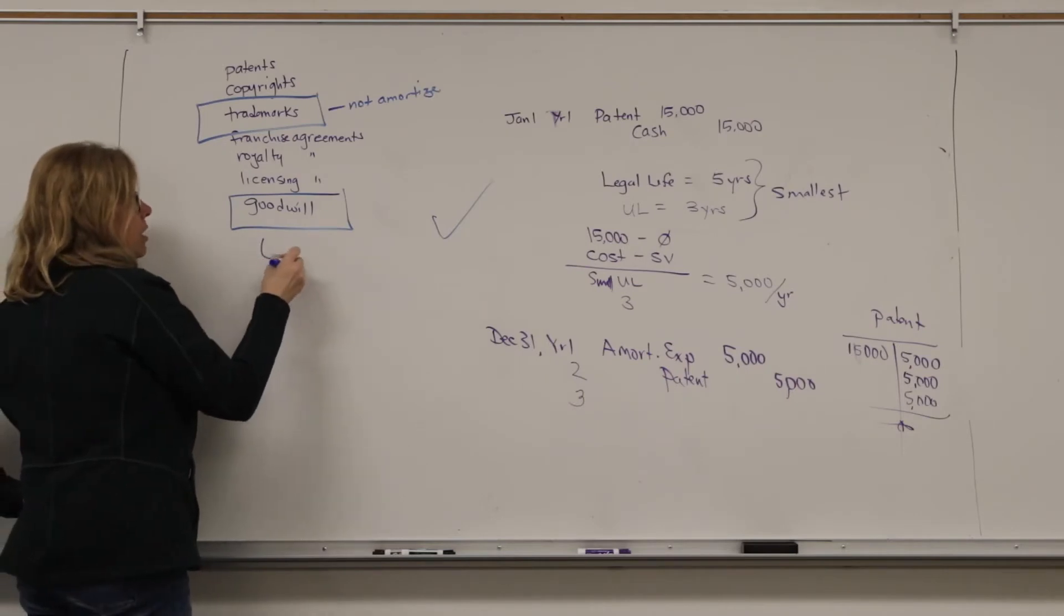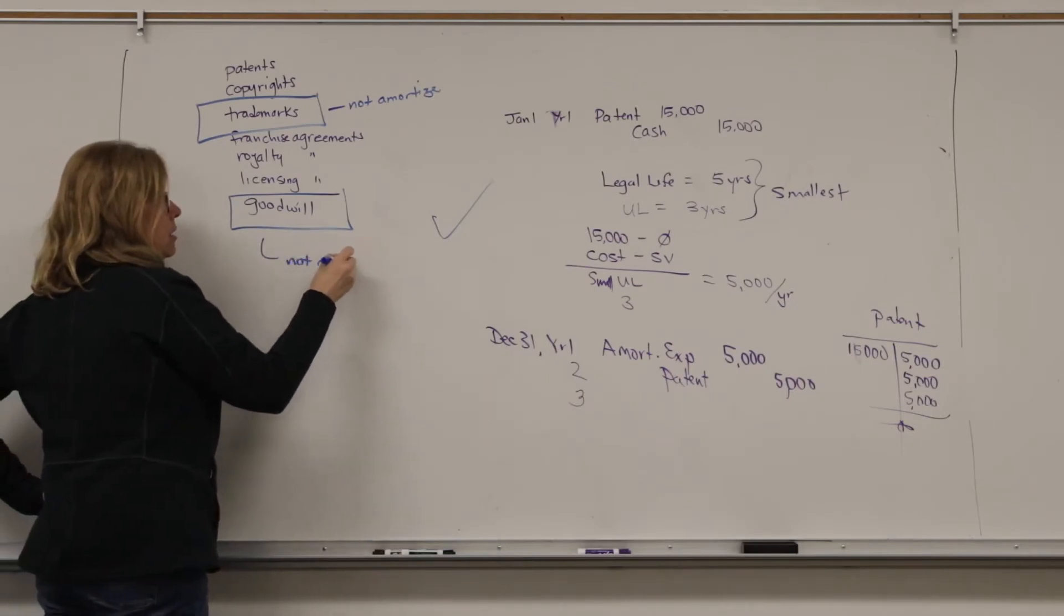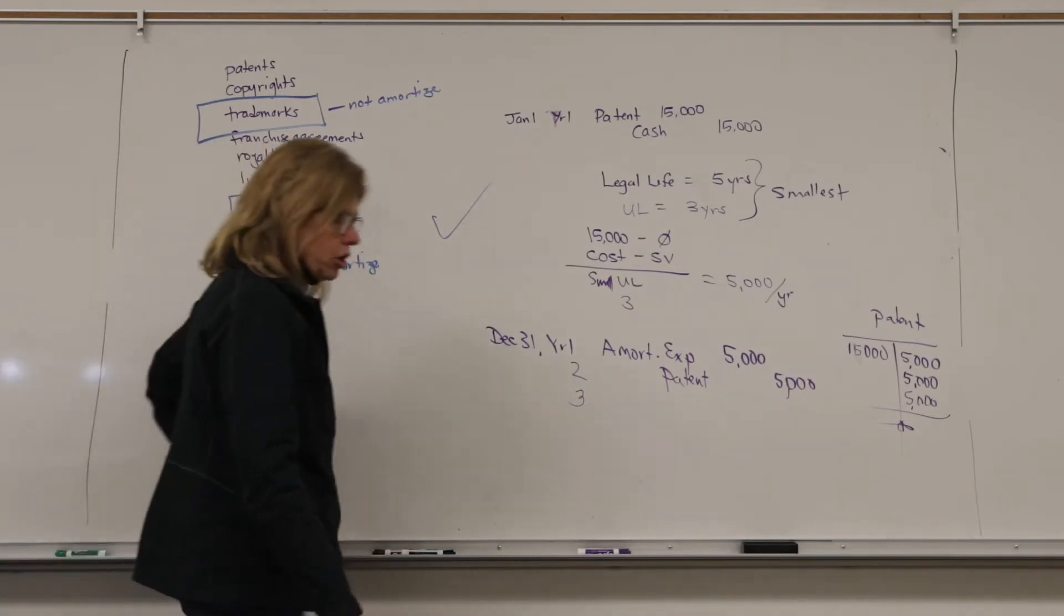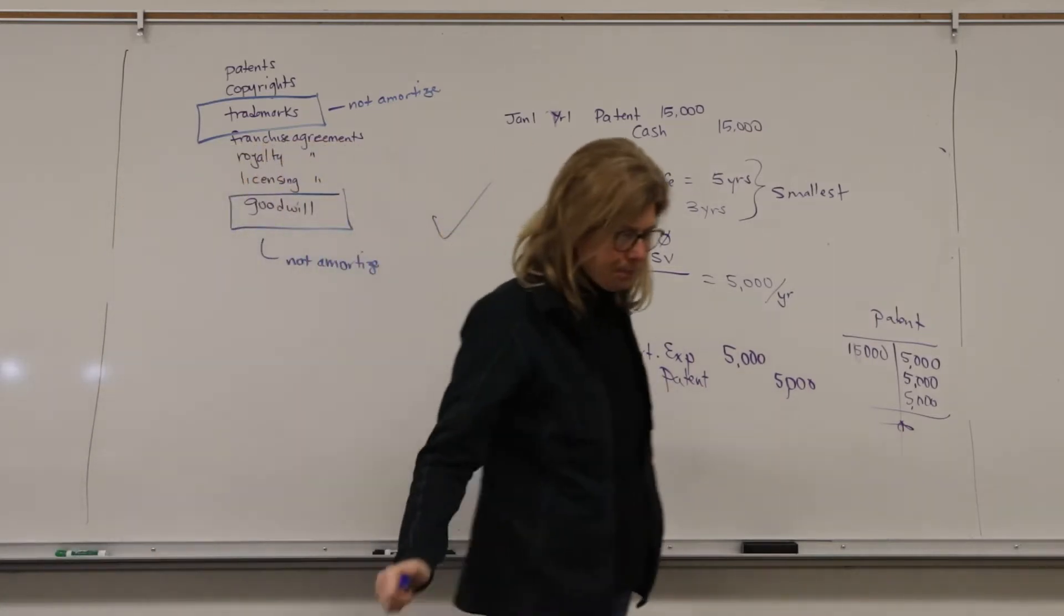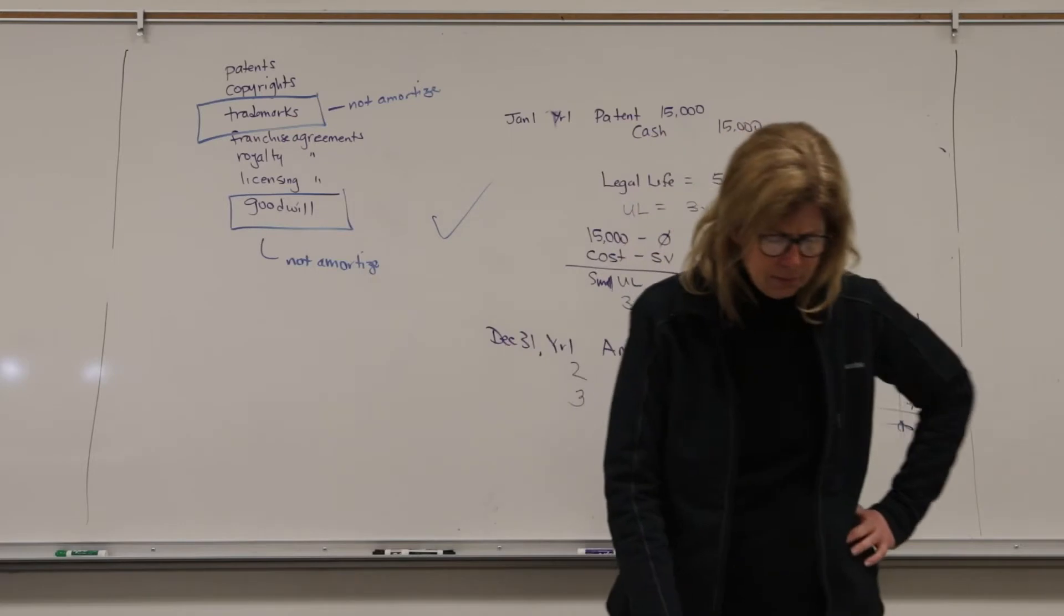I've got it from now until forever. And so, if it lasts forever, like land that we don't depreciate, I will not amortize trademarks. I will also not amortize goodwill, because it also is expected to last forever. So, you ask, what's goodwill?